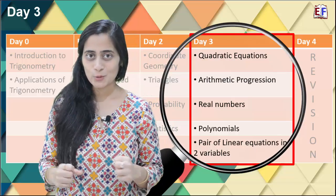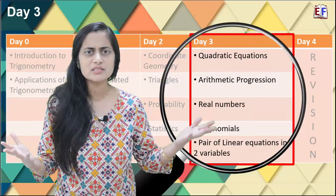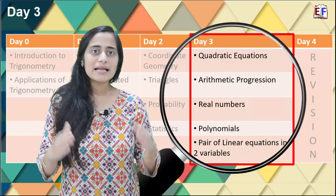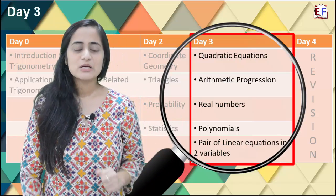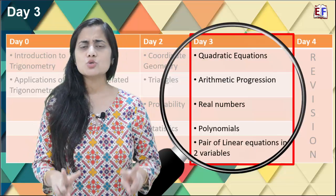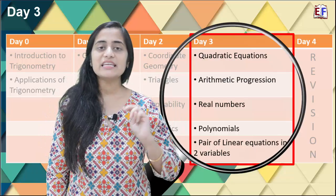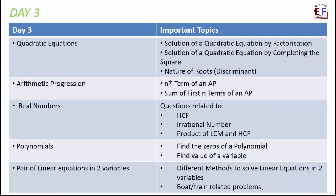On day three we have covered more than 50% of the syllabus. Today we cover the entire algebra — five lessons: quadratic equations, arithmetic progressions, real numbers, polynomials, and pair of linear equations in two variables. We start with quadratic equations and arithmetic progressions as the two most important algebra lessons. This is not too much to cover in a day because algebra lessons are all based on one or two concepts with many questions on those concepts, so revision will not consume too much time.